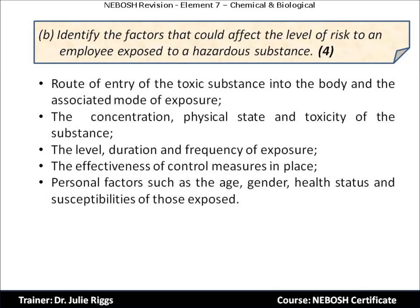For question B — identify the factors that could affect the level of risk to an employee exposed to a hazardous substance — remember this is 'identify', so you don't need to give a long explanation. I've given five answers but you only need four. These include: the route of entry of the toxic substance into the body and the associated mode of exposure; the concentration, physical state and toxicity of the substance; the level, duration and frequency of exposure; the effectiveness of control measures in place; and personal factors such as age, gender, health status and susceptibility of those exposed.